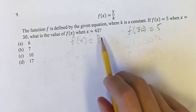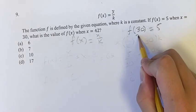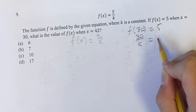Plugging in 30, we get 30 over k equals 5.